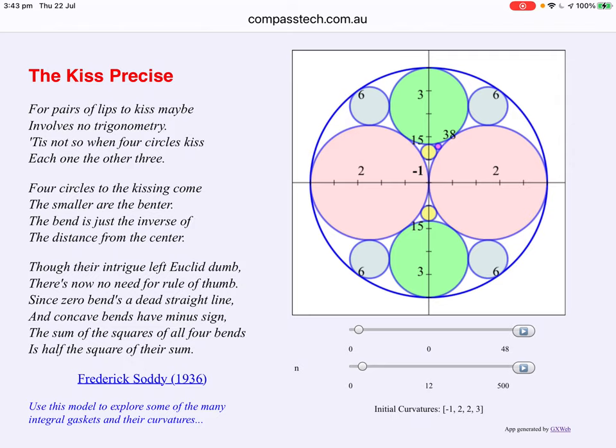So the numbers we see on this model represent the curvature of each circle. At the centre you'll see a minus one. The circle that envelops, that bounds all the others is denoted with a negative curvature. The others are all positive. But what's interesting is these are all whole numbers. They're all integers.